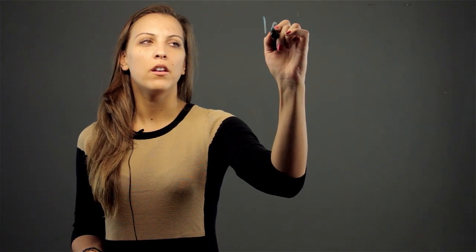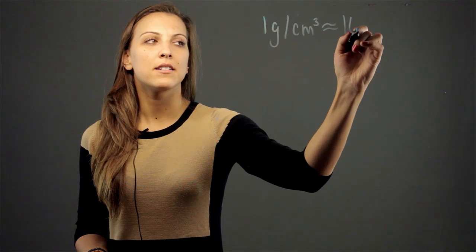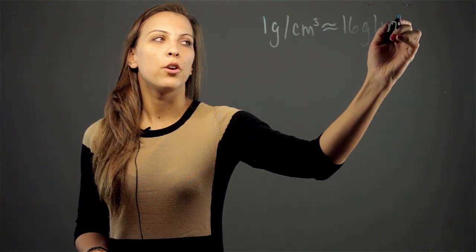The conversion that you need to know is that one gram per cubic centimeter is equivalent to about 16 grams per cubic inch.